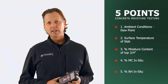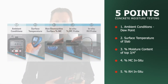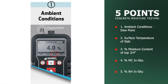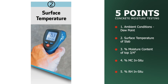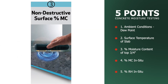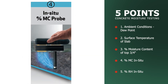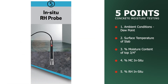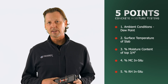To recap, today we looked at five points of testing moisture in a concrete slab. The first point was ambient conditions, taking a particular look at the ambient dew point. The second point was the surface temperature of the slab, making sure the ambient dew point was at least 10 degrees above that surface temperature. The third point was moisture content in the top three-quarter inch of the slab using the concrete moisture encounter. The fourth point was the concrete moisture probe, taking actual moisture content within the slab. And the last point was an in-situ RH probe, giving us the RH percentage at 40% depth of the concrete slab.